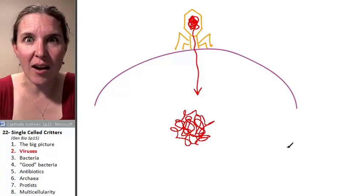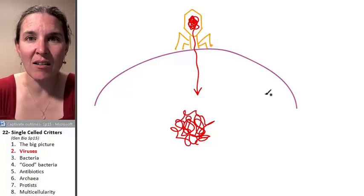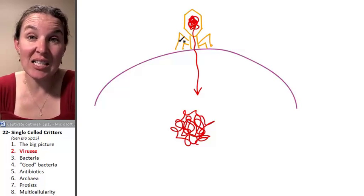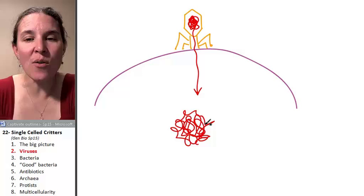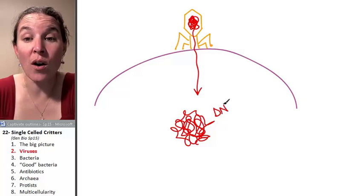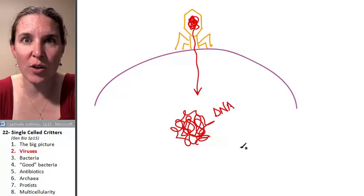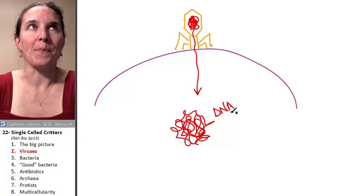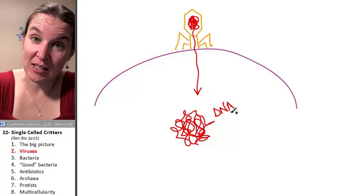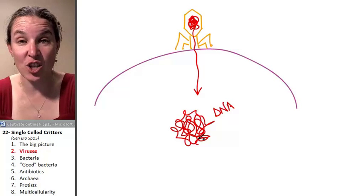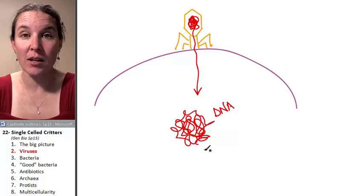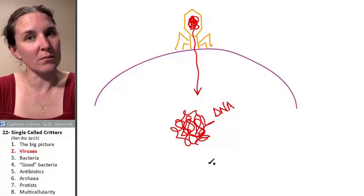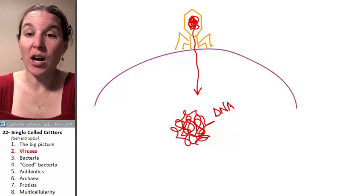It will squirt its genetic material into the cell that it is infecting, and its little protein coat stays outside. And now there's DNA or RNA floating around in this cell. Successful viruses have DNA chunks that the cell is like, oh look, let's make this into a protein, which usually isn't a great strategy.